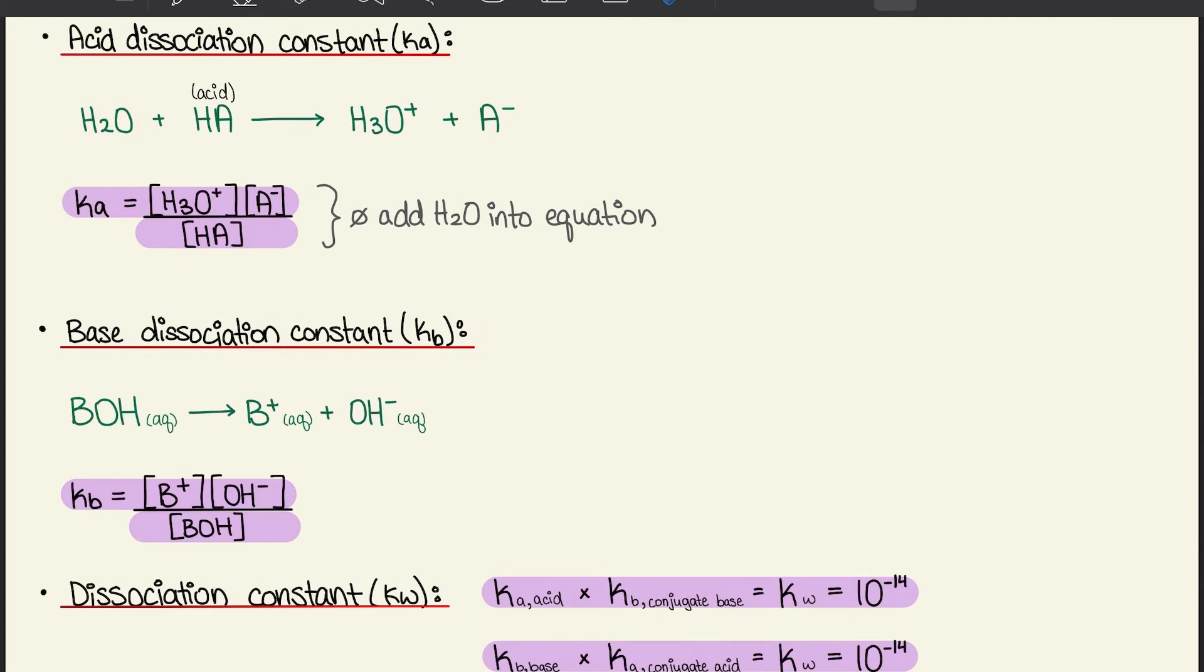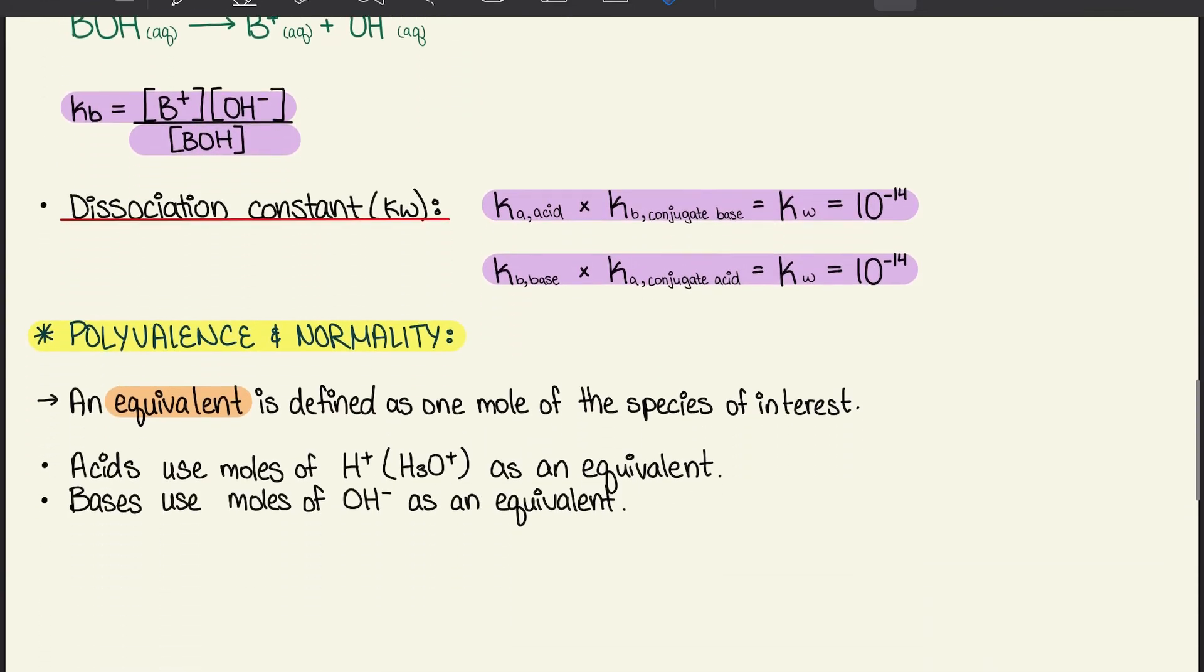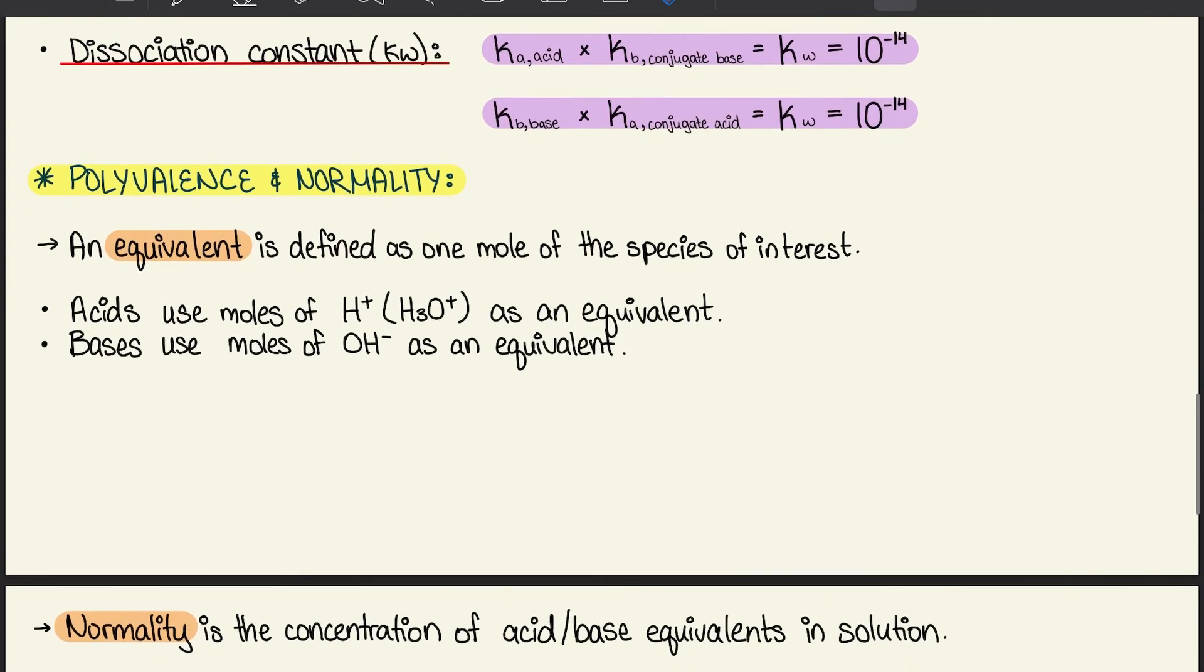We do the similar thing for base dissociation constant, but instead of Ka, we have Kb. Same thing happens: we write our base in the denominator and our products in the numerator.